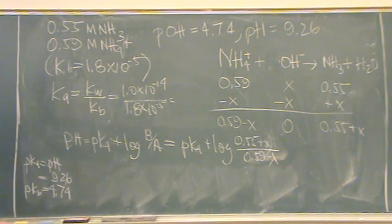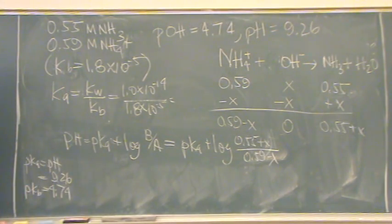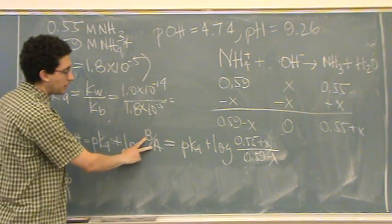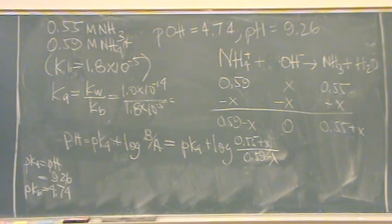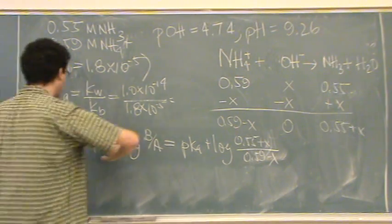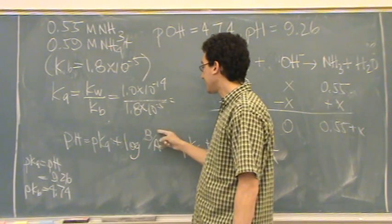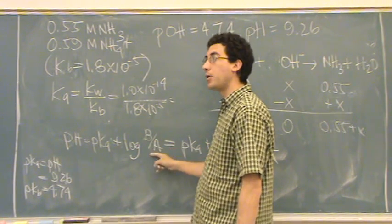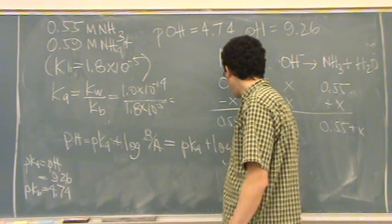So what happens is at the midpoint, B and A are related in what way? Equal. They're equal to each other. At the midpoint, because if pH equals PKA, this has to be zero. And so this quantity has to be one, because the log of one is zero. So B and A have to be equal to each other.